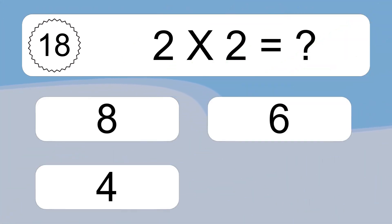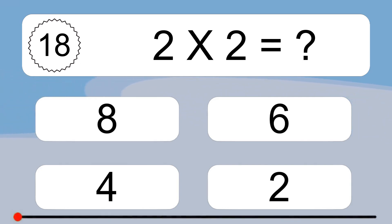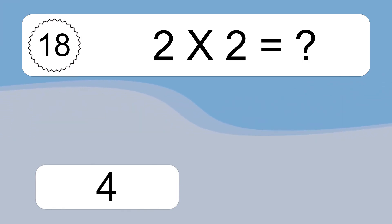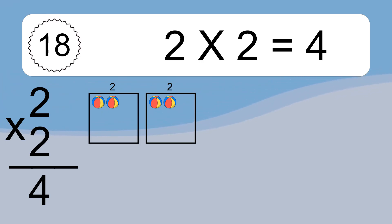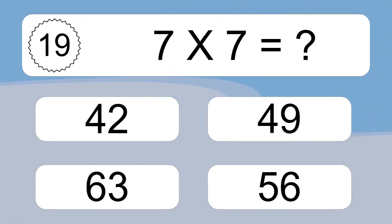2 times 2 equals what? 2 times 2 equals 4. We have 2 boxes, and each box has 2 colorful balls inside. 7 times 7 equals 49.